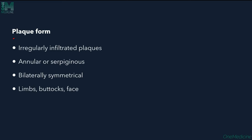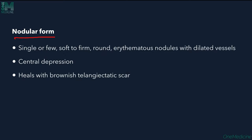The plaque form presents as irregularly infiltrated plaques, either annular or serpiginous, bilaterally symmetrical on the limbs, buttocks, and face. The nodular form shows single or few soft-to-firm, round erythematous nodules with dilated vessels, a central depression, and healing with an ateleangiectic scar.